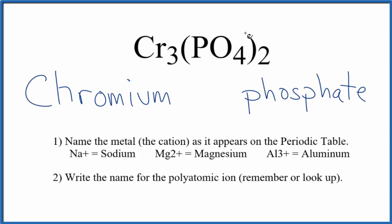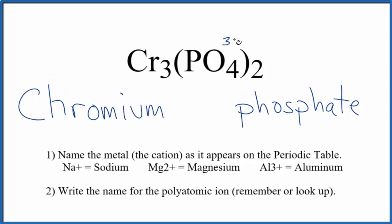So the phosphate ion, the whole thing, always has a charge of three minus. This is one you need to memorize. We have two times three minus, that's six minus. So on this side we need a six plus for the whole charge to balance out, give us a net charge of zero.